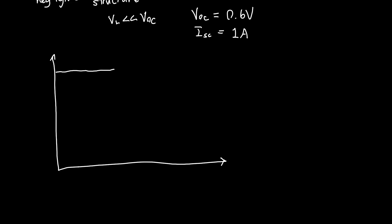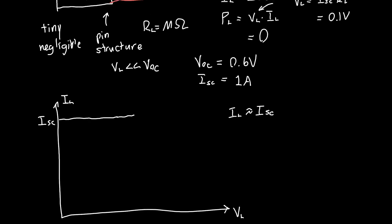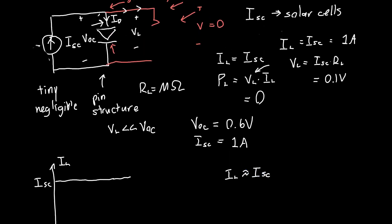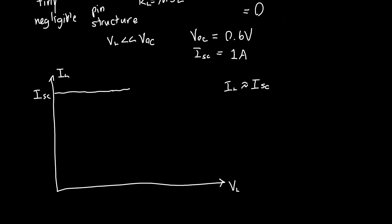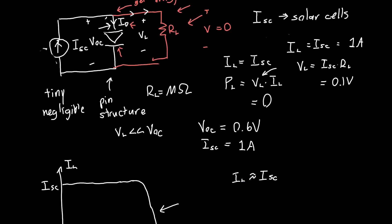Plotting load voltage on the x-axis and load current on the y-axis: initially, the load current is approximately equal to the short circuit current, because all current is flowing through the resistor and the diode current is negligible. But once we get near the open circuit voltage, the current starts to decrease, and as we approach the open circuit voltage, the load current becomes zero.